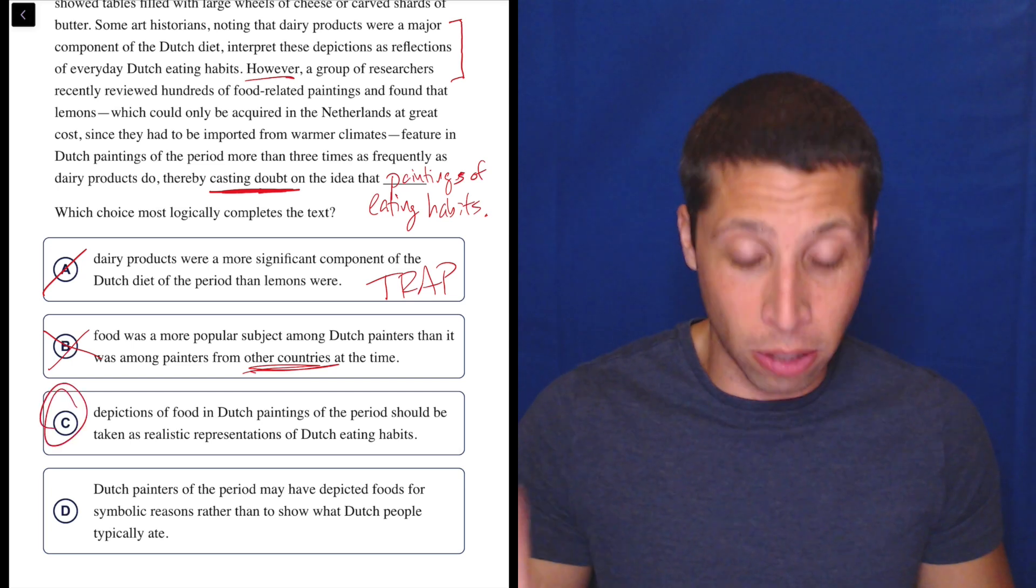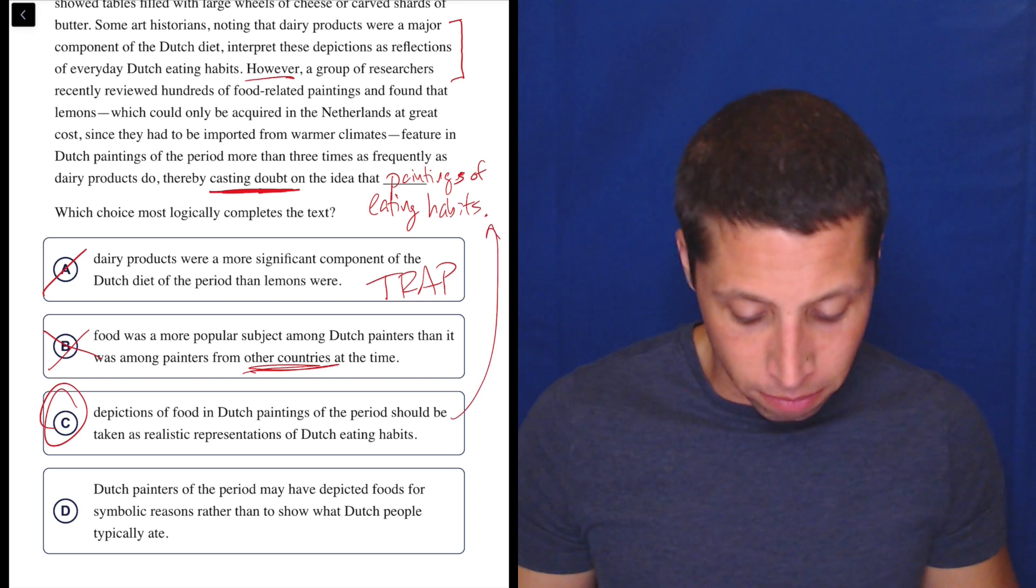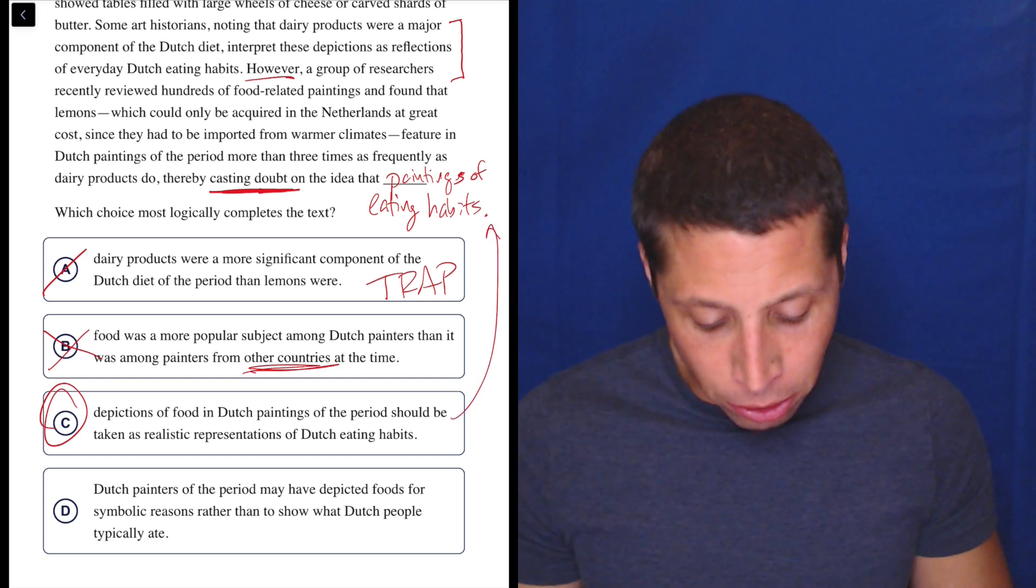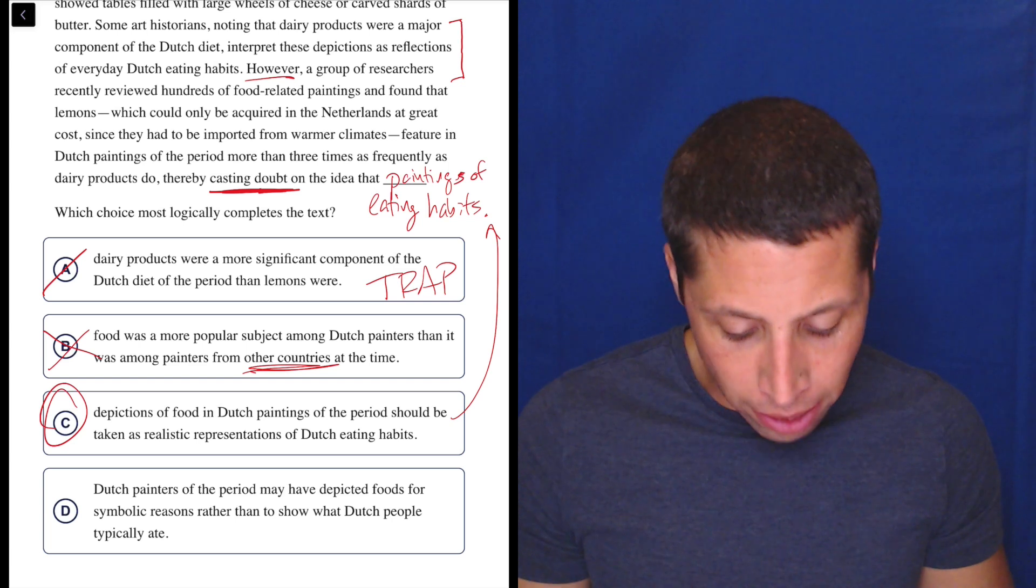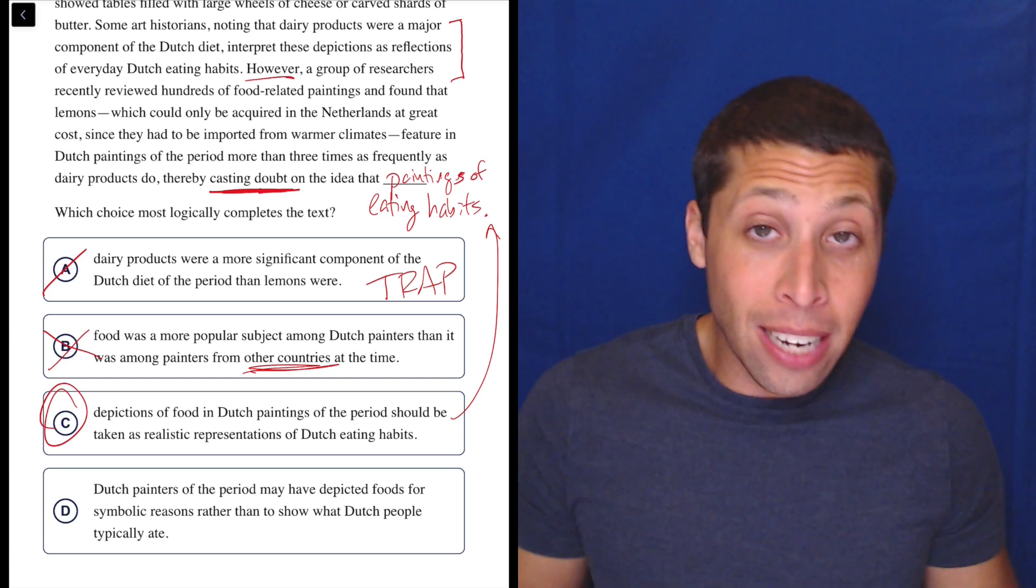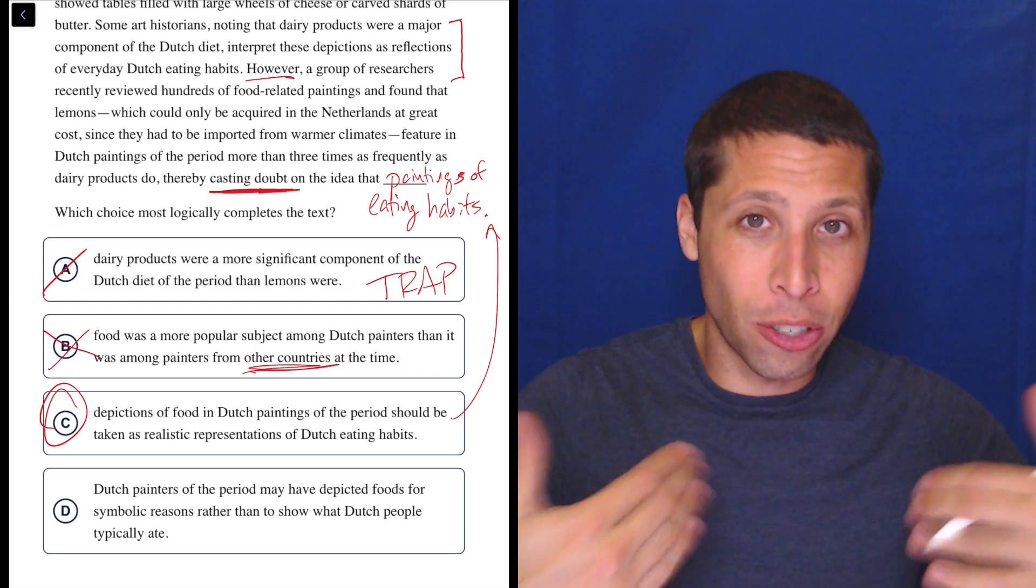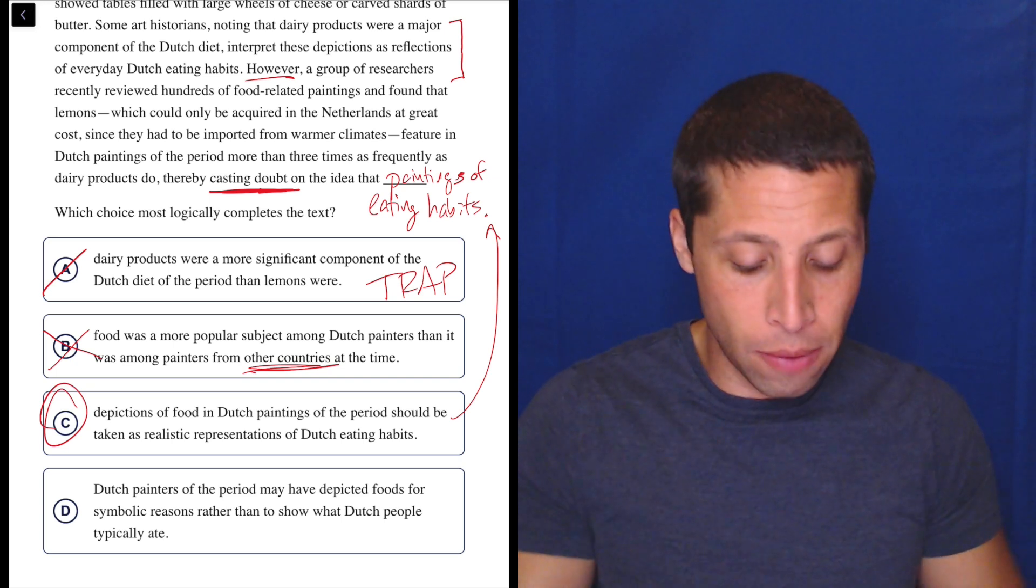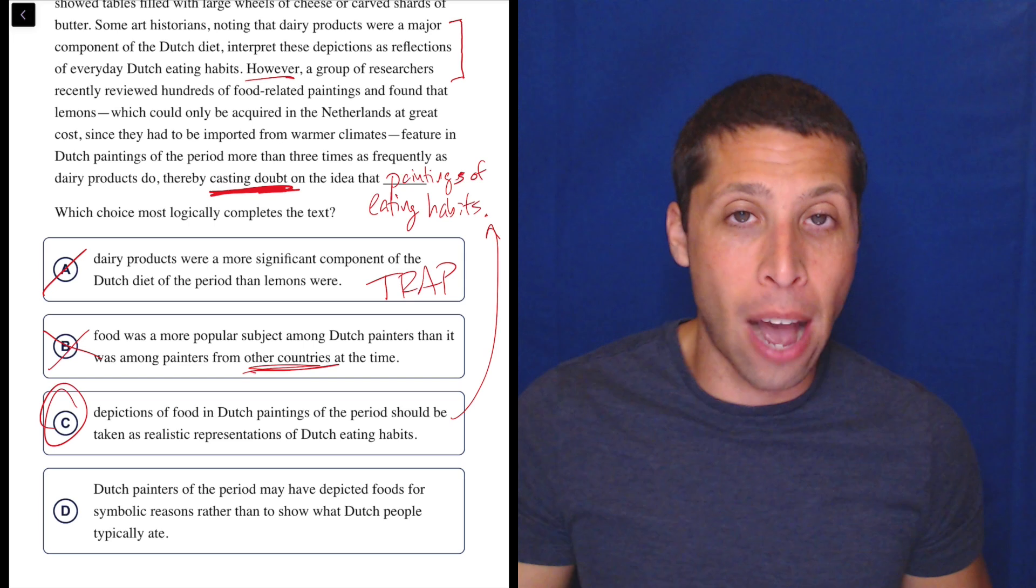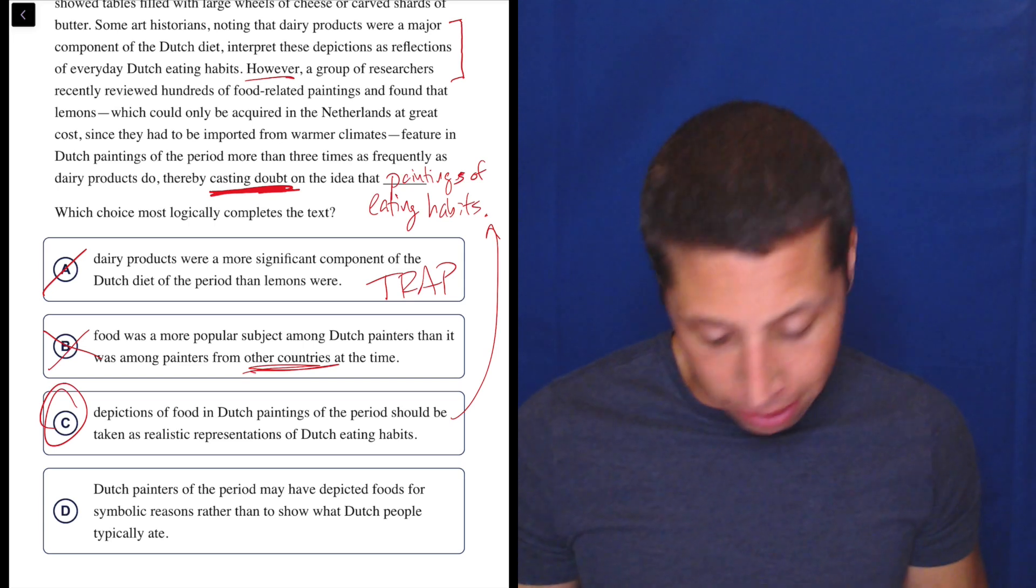I'm going to read D anyway, but I'm very sure that that's it because it's kind of basically just what I wrote here. D, Dutch painters of the period may have depicted foods for symbolic reasons rather than to show what Dutch people typically ate. This is again, a true thing. But if we are casting doubt on this, then we are saying that it's not true. So if you had trouble with this phrase, casting doubt, that means we don't think that it's true.